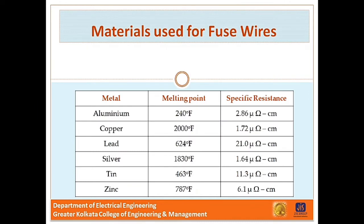The most commonly used materials for fuse elements are lead, tin, copper, silver, zinc, and aluminium. In this picture you can see the melting point and specific resistance of each material. For small currents up to 10 amperes, tin or an alloy of lead and tin (lead 37%, tin 63%) is used for making the fuse element. For larger currents, copper or silver is employed, and it is usual practice to tin the copper to protect it from oxidation.